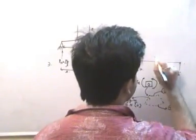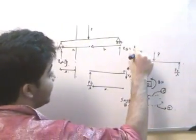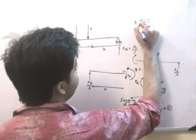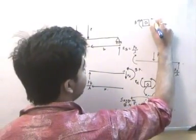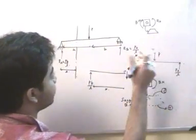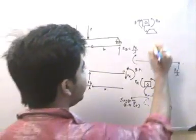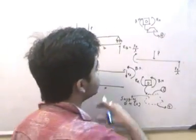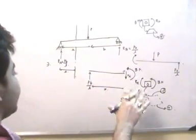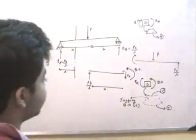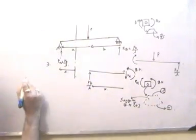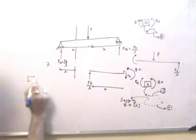If the bending moment acts in this direction — for instance, this is PA by L and this is P — when considering the right portion of the beam, the resultant moment will create a sagging moment with top fibers in compression and bottom fibers in tension. So this will be positive. If we consider the right portion of the beam and the bending moment is clockwise, we consider it a positive bending moment. If we consider the left portion and the bending moment is anticlockwise, we say it is a sagging or positive bending moment.